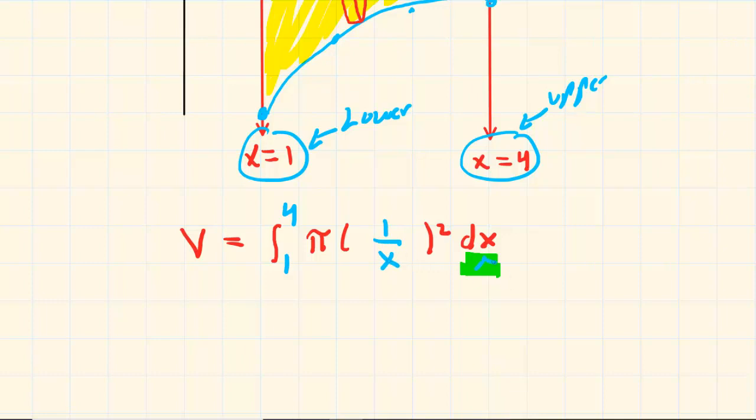What is nice about that is it will give you an integral that is now in terms of x, and that's what we wanted because we have a dx in our expression. So we can next simplify this integral. One over x squared is the same thing as one over x times one over x, which of course is one over x squared. Also, we can factor the pi to the outside, so we're going to have pi times the integral from one to four of one over x squared dx.